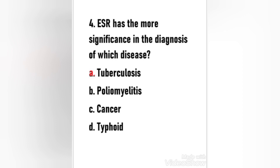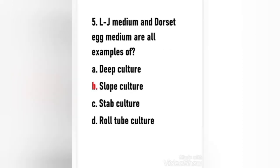Next question: ESR has the most significance in the diagnosis of which disease — (a) tuberculosis, (b) poliomyelitis, (c) cancer, (d) typhoid. The right answer is option A — tuberculosis.